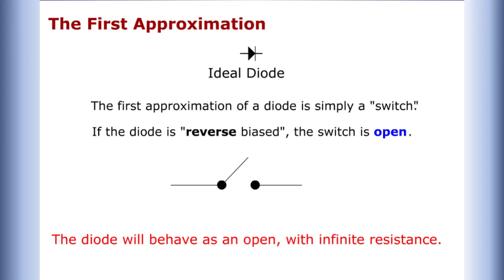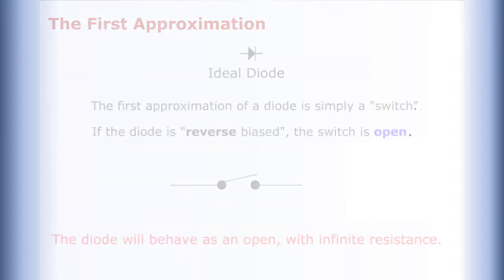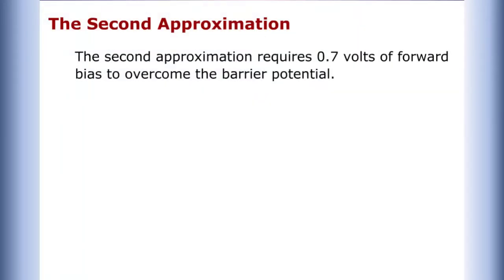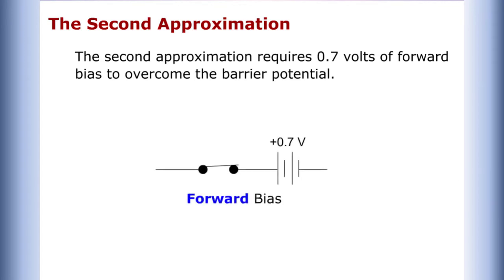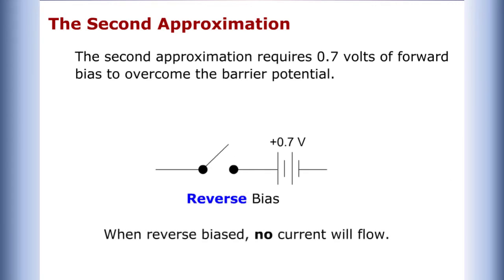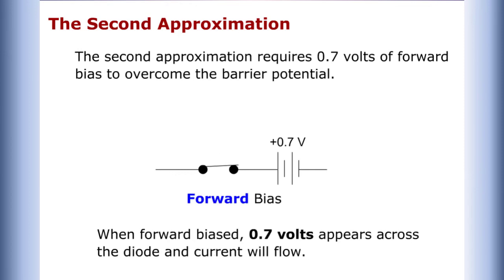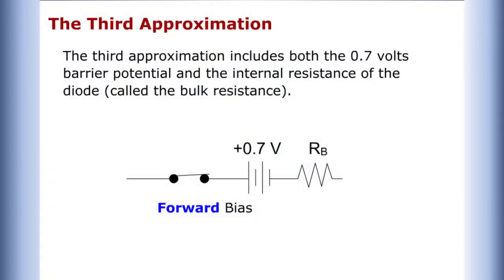The second approximation requires 0.7 volts of forward bias to overcome the barrier potential. When reverse biased, no current will flow. When forward biased, 0.7 volts appears across the diode and current will flow.